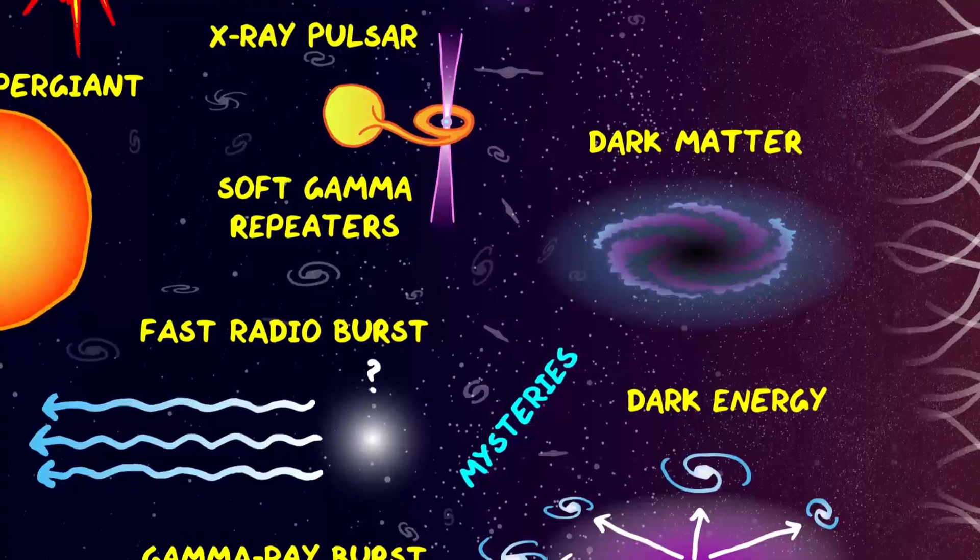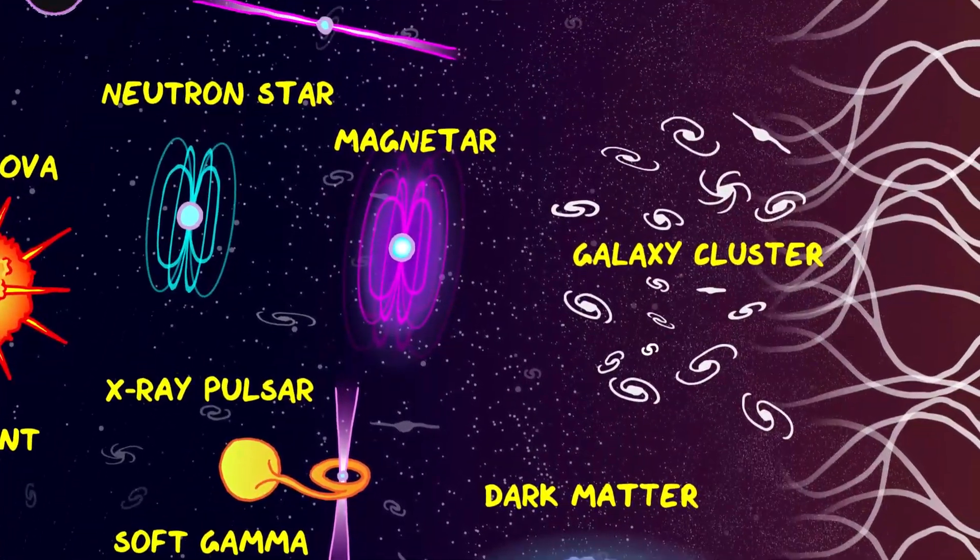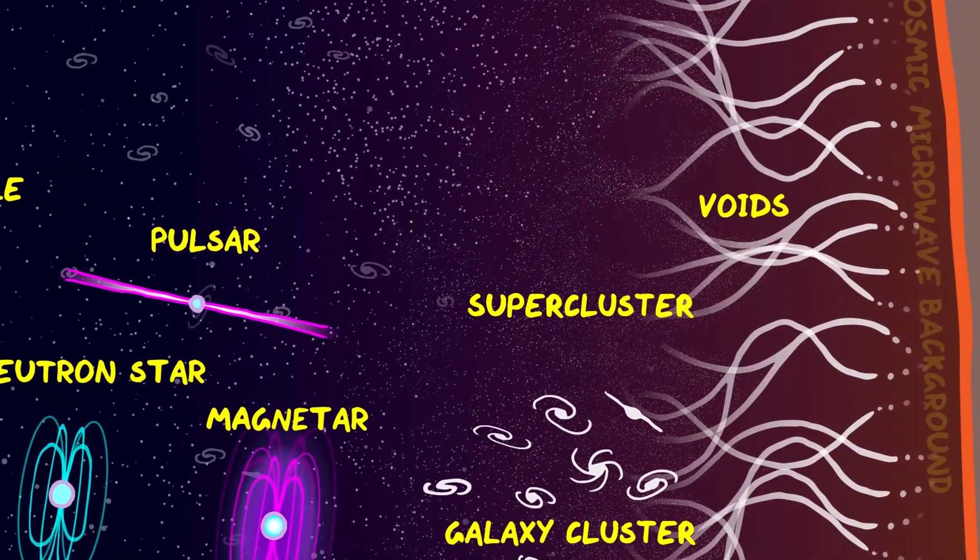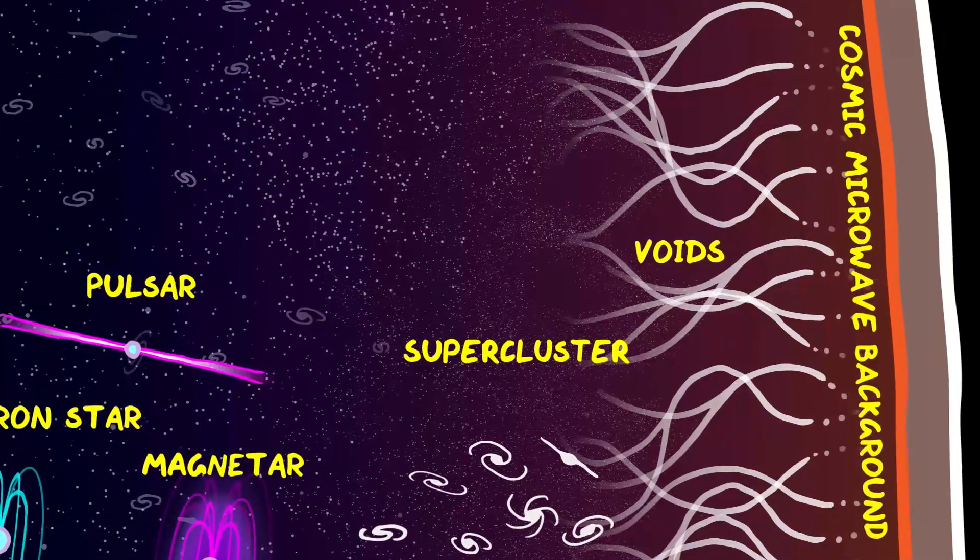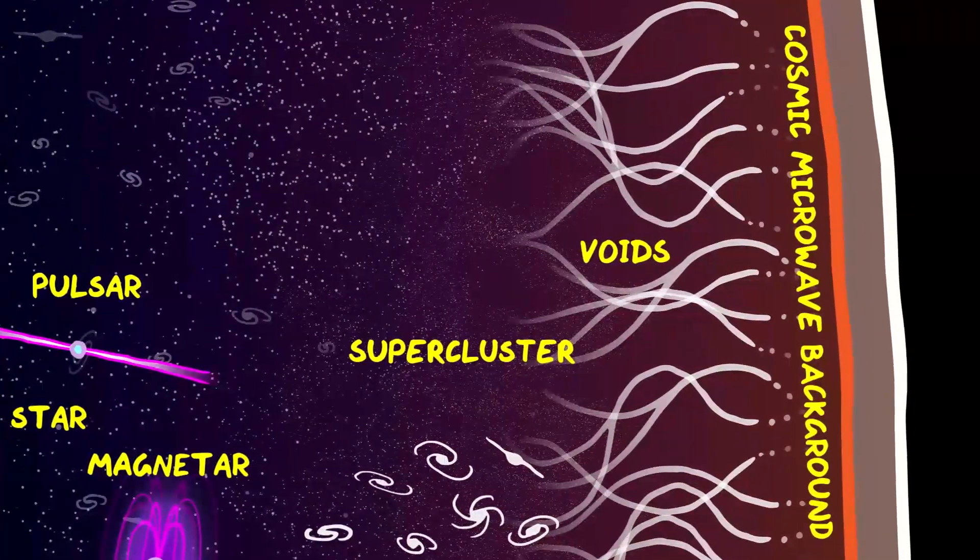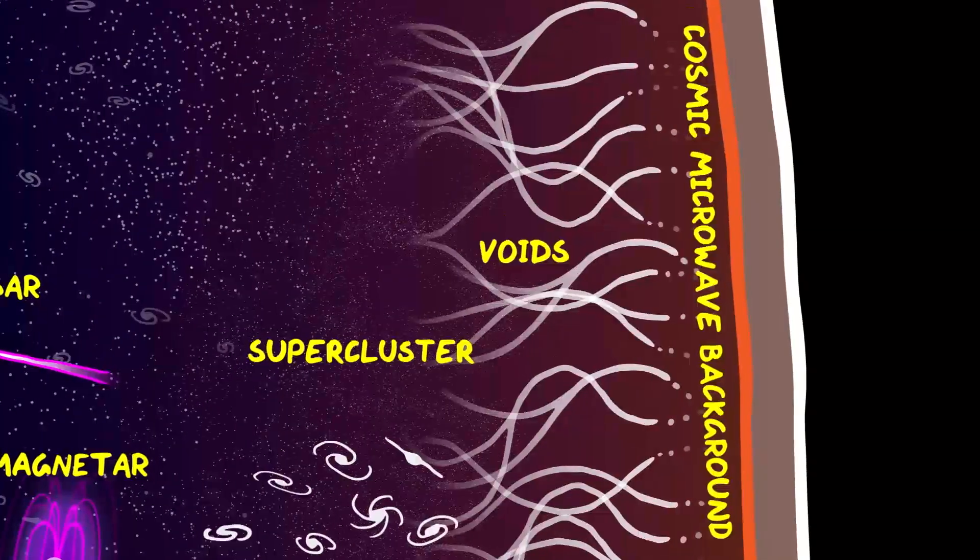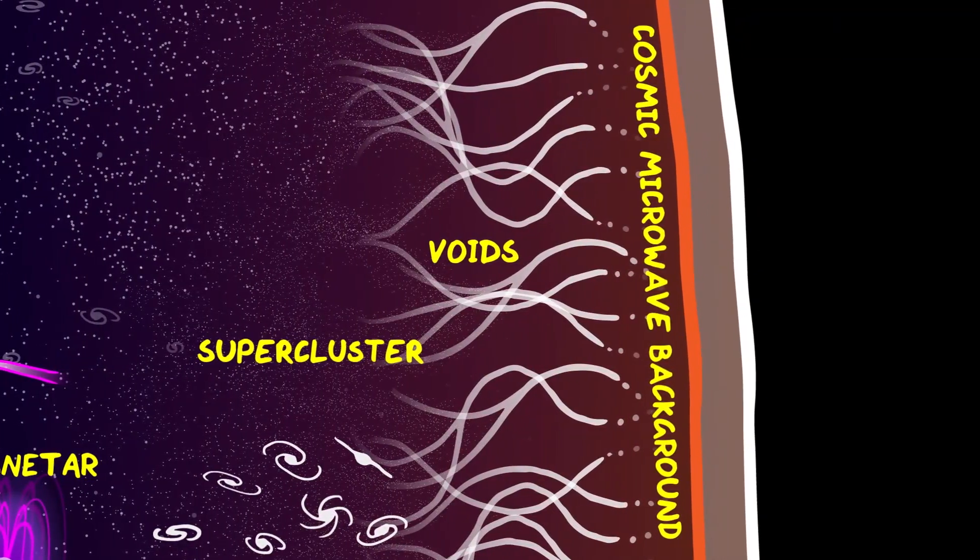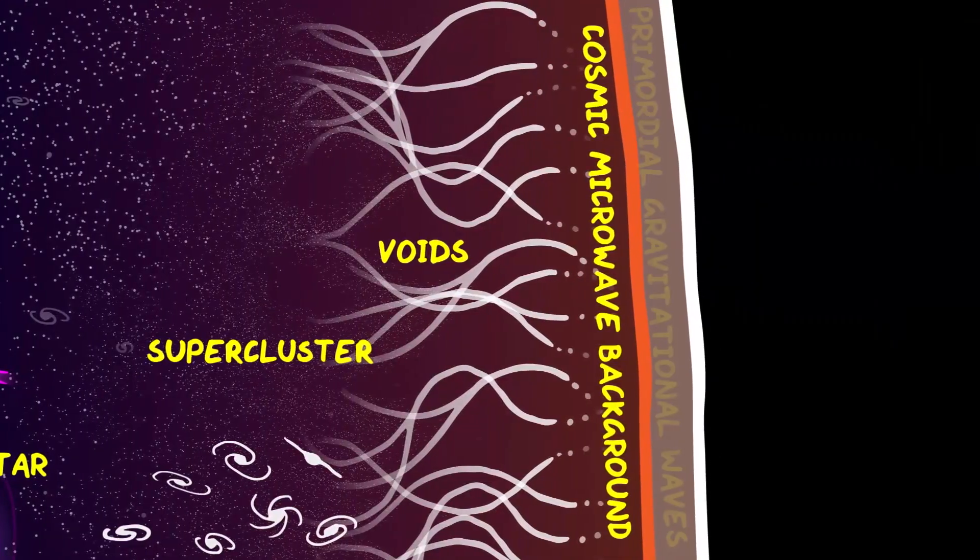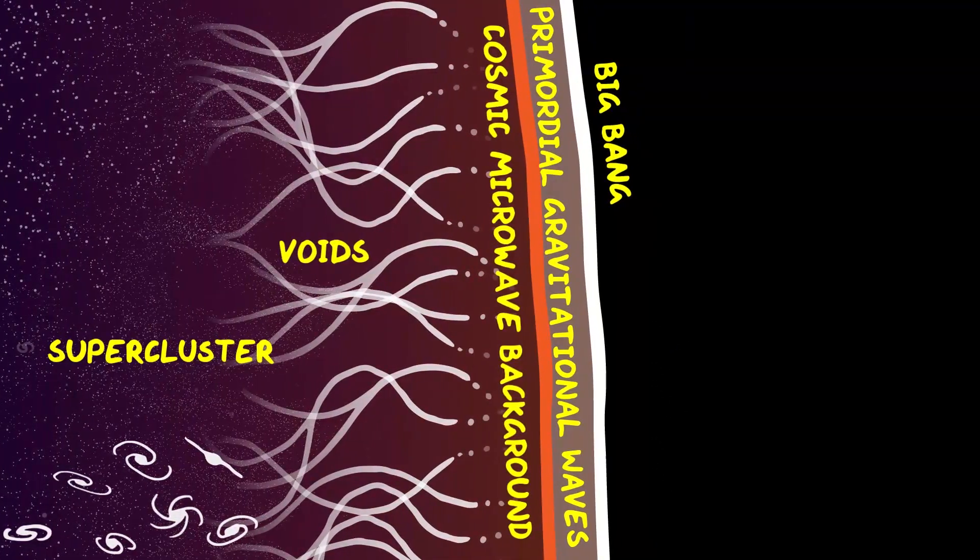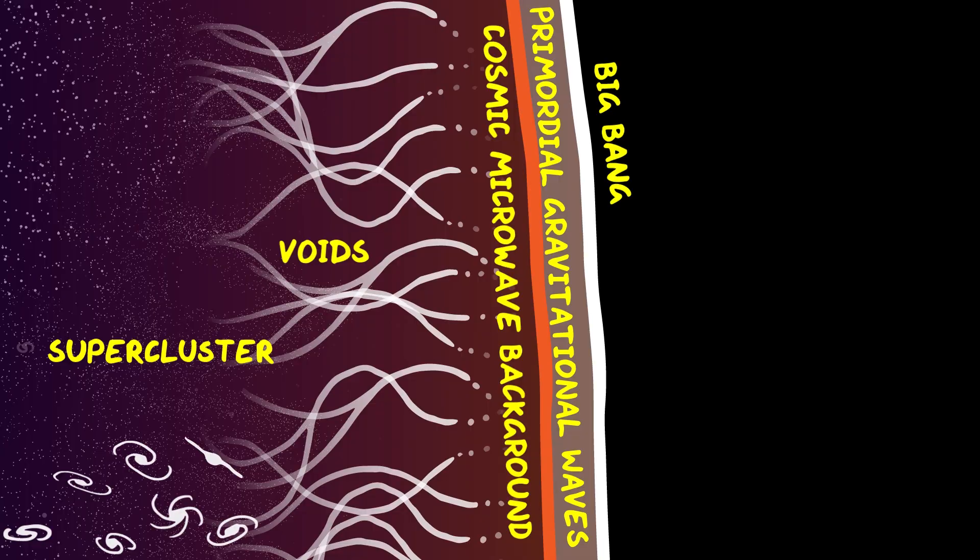As we go to the largest scales in the universe, we see galaxy clusters, then super clusters, and the dark voids between them. Then we get to the cosmic microwave background, the signal from when the universe first became transparent 380,000 years after the big bang. Behind this we can't see anything with light, but we will be able to peer behind it with gravitational wave astronomy, right back to the big bang, which is as far as we'll ever be able to see in the universe.